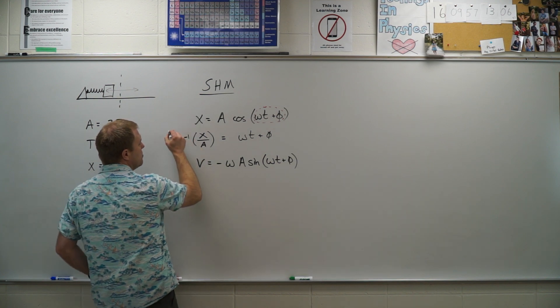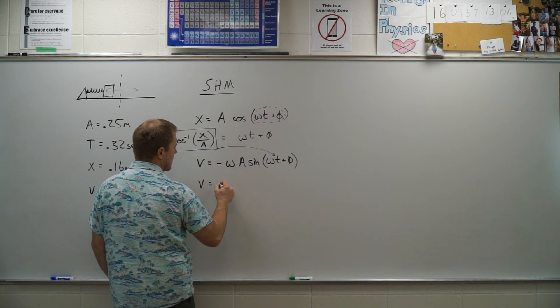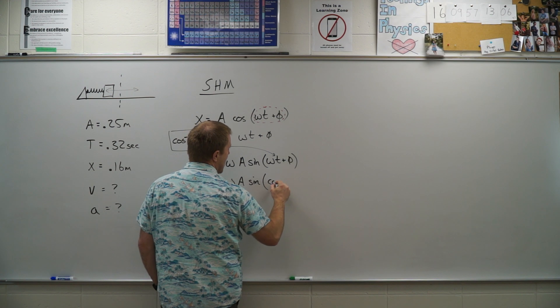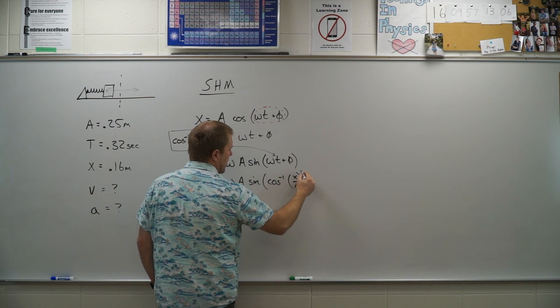So now I just need to go ahead and I'm going to substitute all of that in right here. So now I know the speed is going to be negative omega A times the sine of the inverse cosine of x over A.